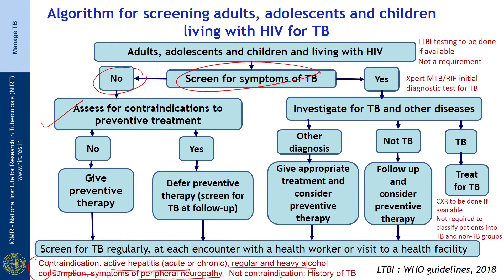However, history of TB and pregnancy are not contraindications. If there are no contraindications, give preventive therapy. If contraindications are present, defer preventive therapy, screen for TB at follow-up, and closely monitor these patients.